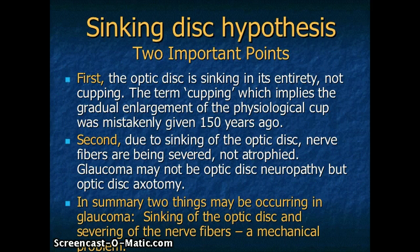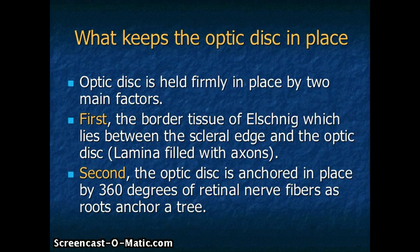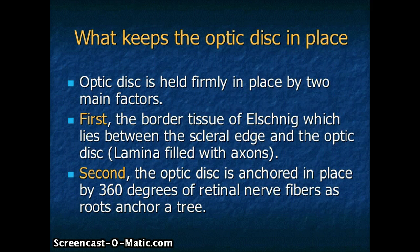In summary, two important events may be taking place in glaucoma: sinking of the optic disc and severing of the nerve fibers. The optic disc is held firmly in place by two main factors. First is the border tissue of the L-sling, which lies between the circular edge or rim and the optic disc. Secondly, the optic disc is firmly anchored in place by 360 degrees of retinal nerve fibers, as roots anchor a tree.